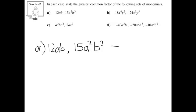You can figure out the greatest common factor of these by first taking the greatest common factor of the coefficients. For example, 12 and 15 — the greatest common factor in this case would be 3.